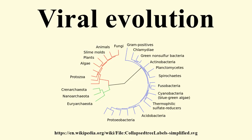There are three classical hypotheses on the origins of viruses. Viruses may have once been small cells that parasitized larger cells. Some viruses may have evolved from bits of DNA or RNA that escaped from the genes of a larger organism. All viruses could have evolved from complex molecules of protein and nucleic acid at the same time as cells first appeared on Earth. None of these hypotheses was fully accepted.